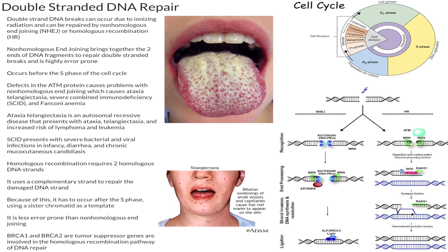As you can imagine, if you have a template and you're not just gluing the pieces back together, it's less error prone. So homologous recombination is less error prone than non-homologous end-joining.